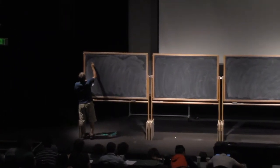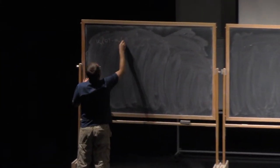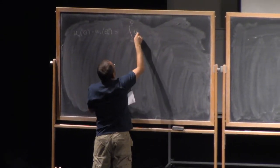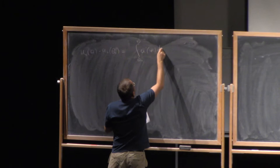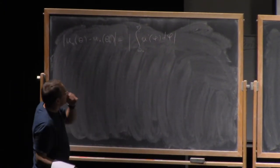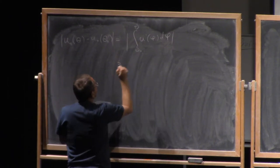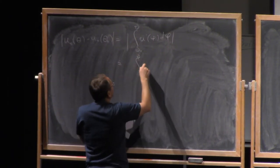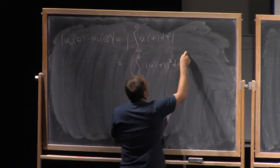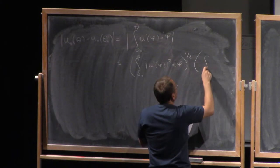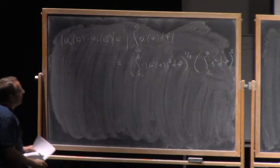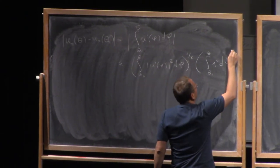Right, so let me take now u₀ at the point theta minus u₀ at the point theta₀. I can write this as an integral between theta₀ and theta u' of, say, phi d phi. Right, this is, of course, also true for the absolute values. Now I can use the Cauchy-Schwarz inequality here to estimate this as an integral between theta₀ and theta, norm u' phi squared d phi to the power one-half and integral theta₀ to theta one d phi, one-half.